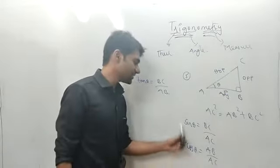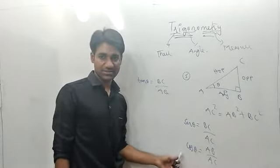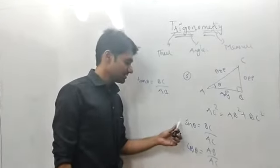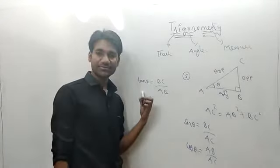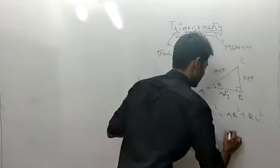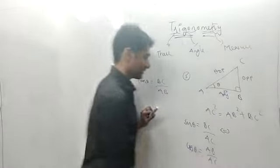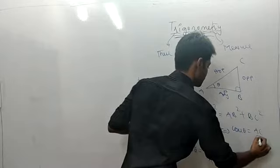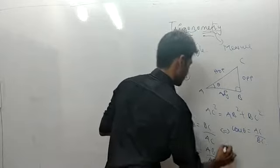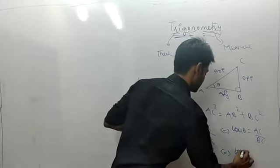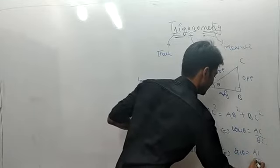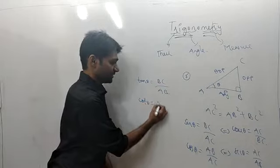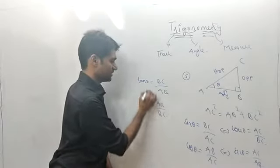These two are the principal trigonometric ratios, and the rest are derived using ratios. So sin θ divided by cos θ gives tan θ. Similarly we can express sin θ = BC/AC, cos θ = AB/AC, and tan θ = BC/AB — all derived from the right triangle.